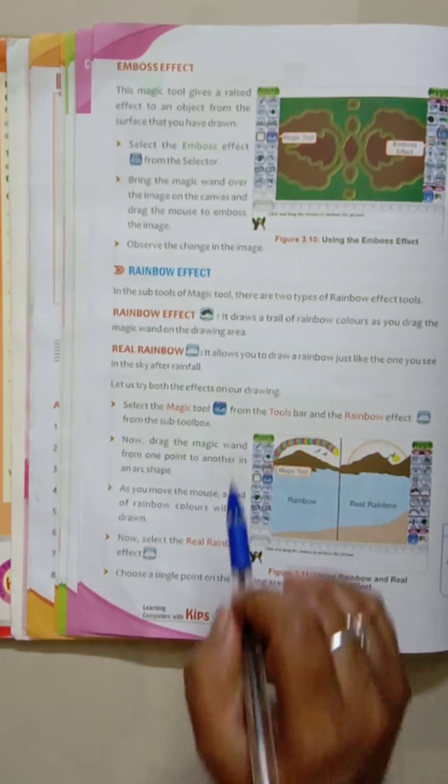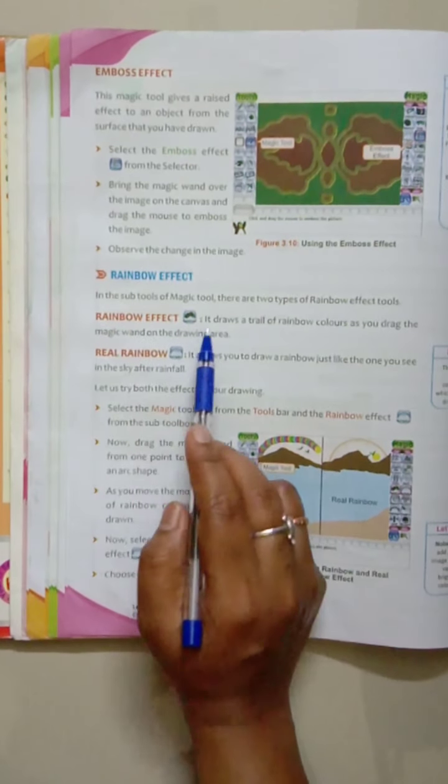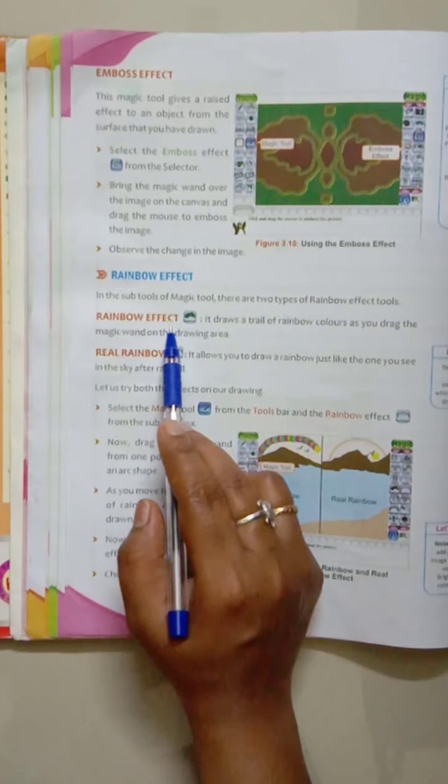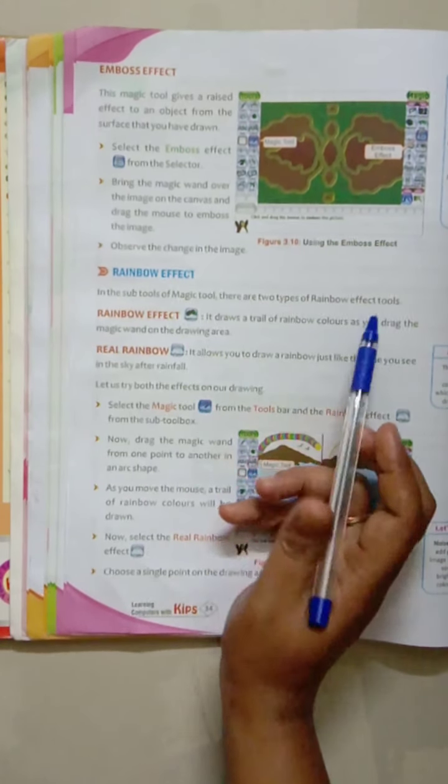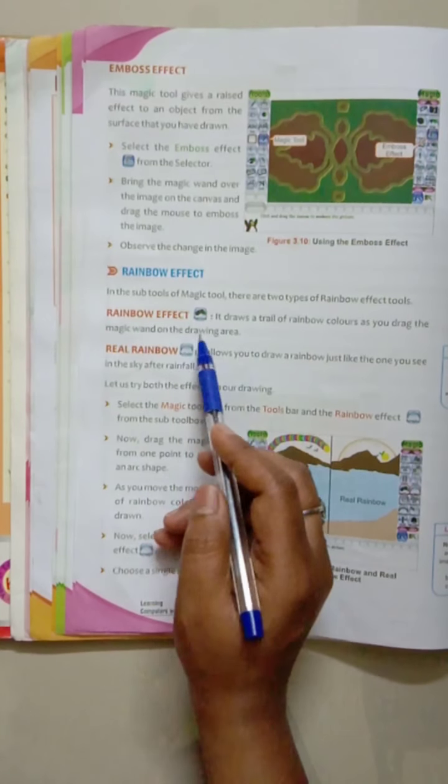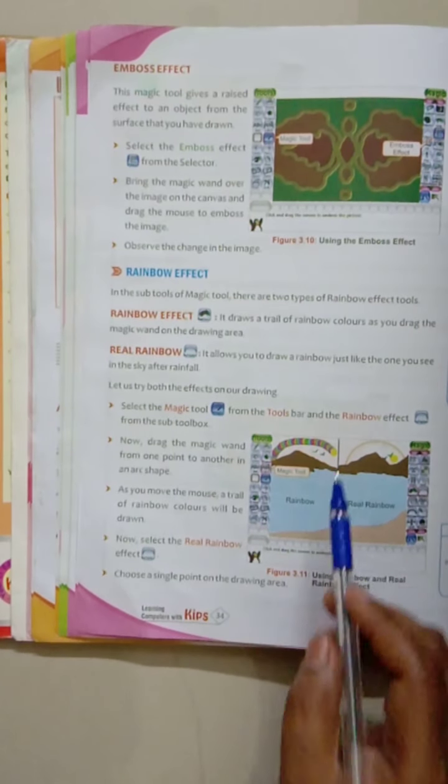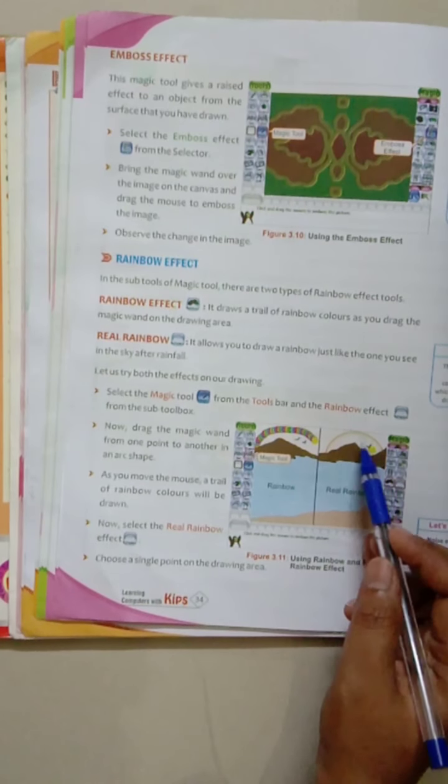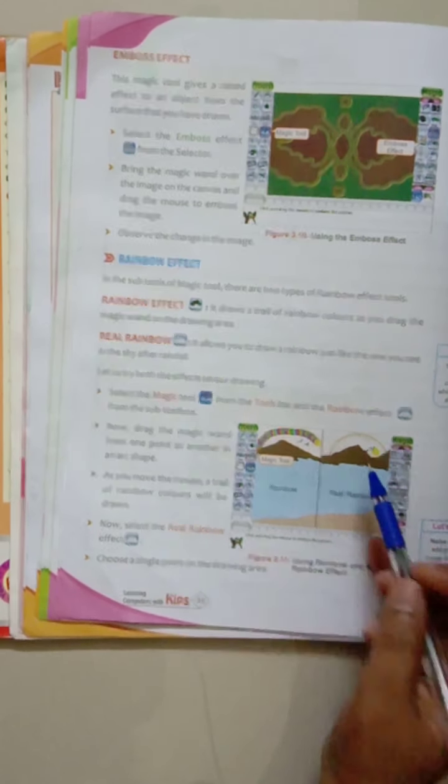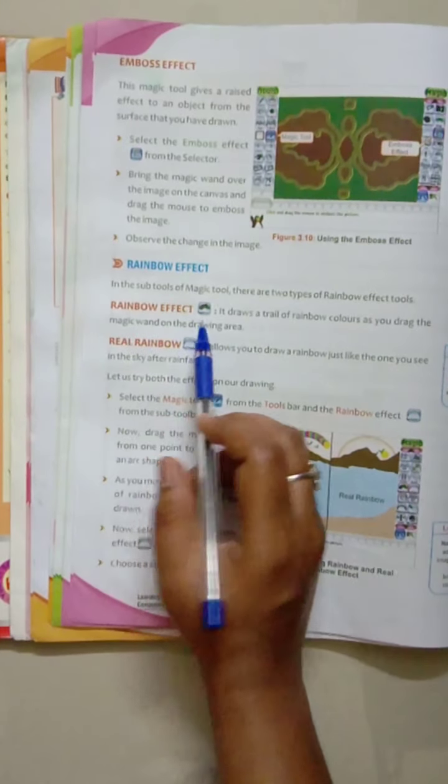In page number 34, they have given explanation here. Rainbow effect: it draws a trail of rainbow colors as you drag the magic wand on the drawing area. Correct. This is the trail of the rainbow, and this is the simple rainbow as it comes as real. So the right answer is rainbow effect.